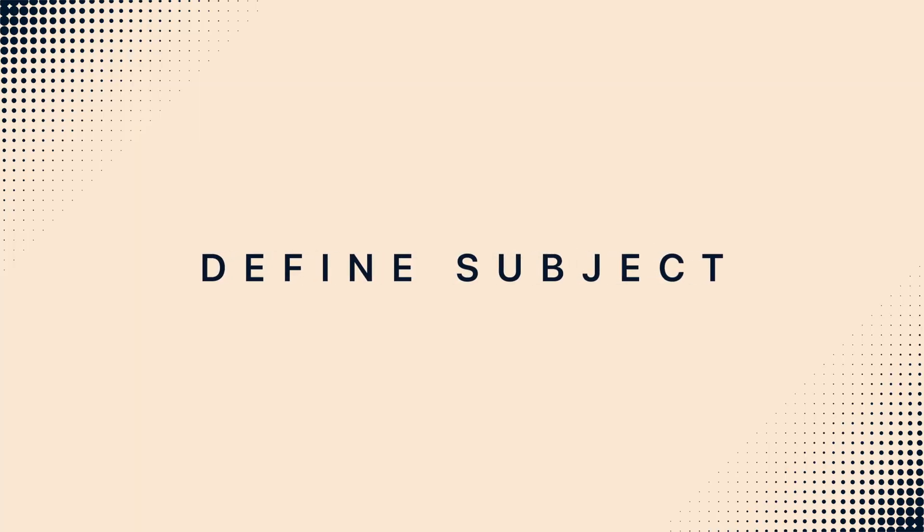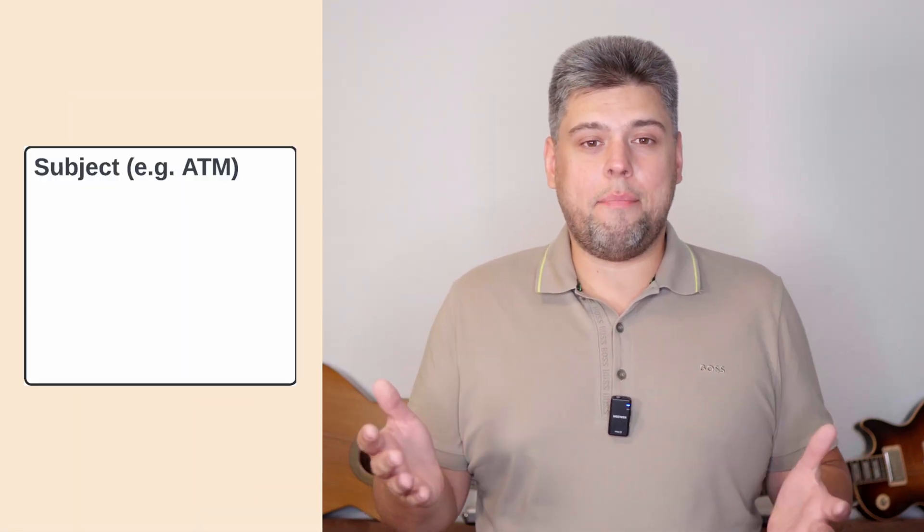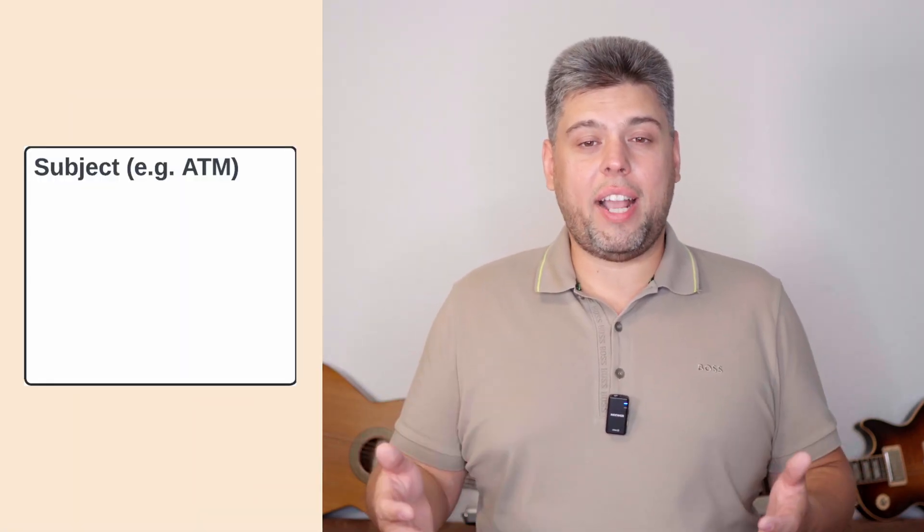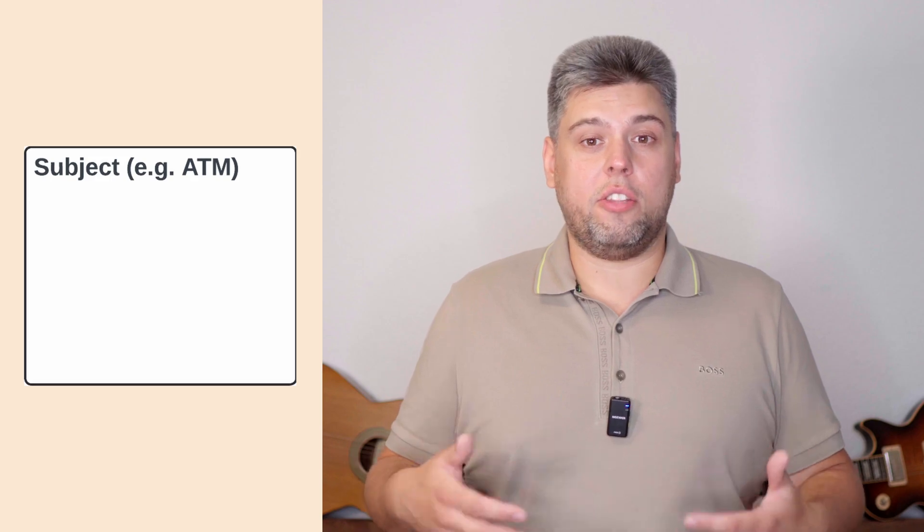To start making a use case diagram, you must define the subject. The subject describes the boundaries of a business, software system, or physical device for which you make a diagram. The subject, also called a system boundary, is a rectangle with the subject's name in the top left corner. Examples of a subject could be a restaurant as a business, an ATM as a combination of physical device and software, or Maps as an example of a mobile application.